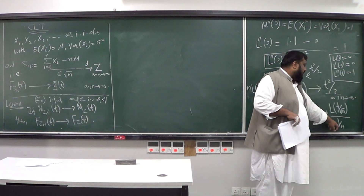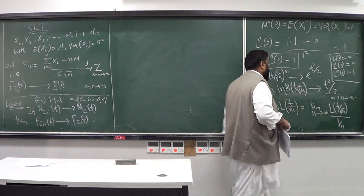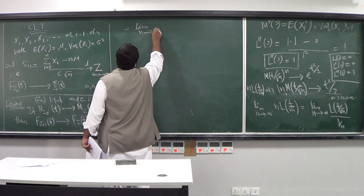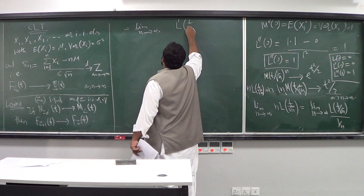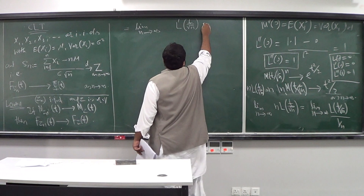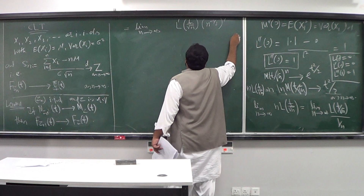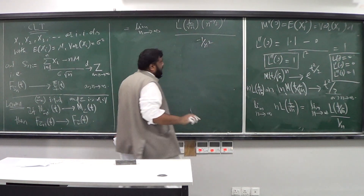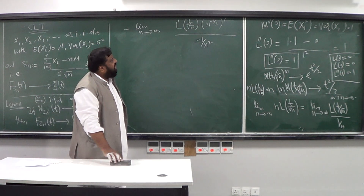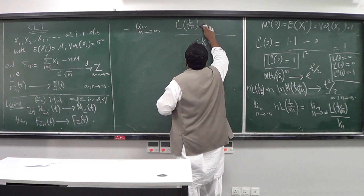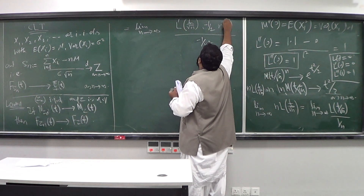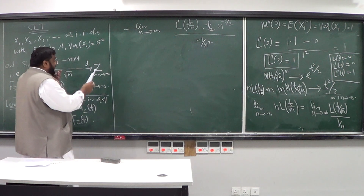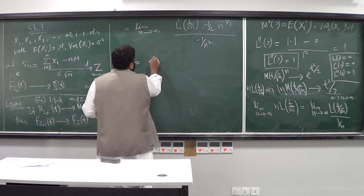Applying L'Hôpital's rule, I differentiate numerator and denominator with respect to n. The derivative of l(t/√n) with respect to n is l'(t/√n) times the derivative of t·n^(−1/2), which is t·(−1/2)·n^(−3/2). The derivative of the denominator 1/n is −1/n². So the limit becomes lim_{n→∞} of l'(t/√n) · (−(1/2)·n^(−3/2)) divided by (−n^(−2)).